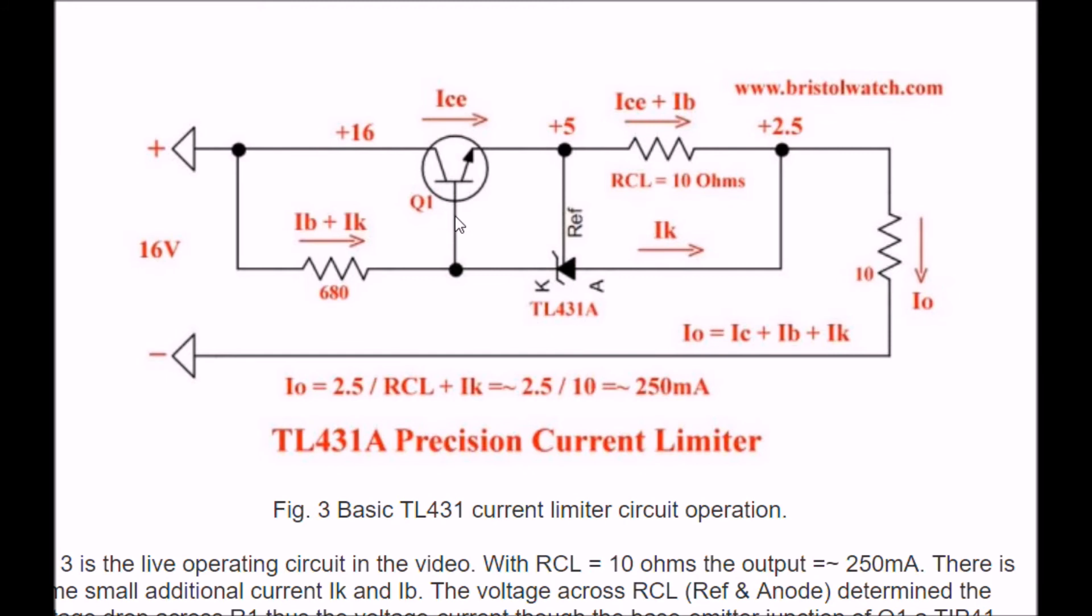What controls the voltage? Basically, the voltage between reference and cathode controls the current flow through the gate, through the base emitter junction, which controls the conduction of Q1.